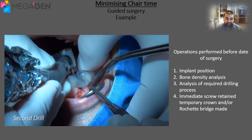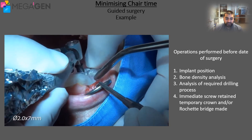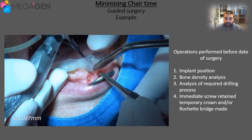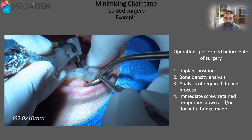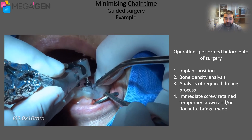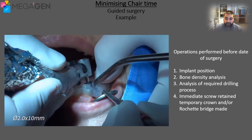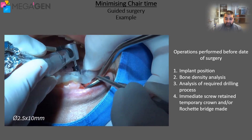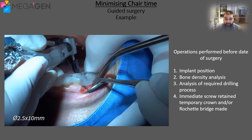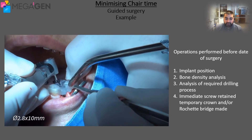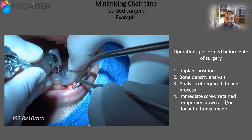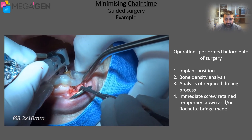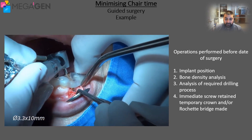This means that the dentist has been able to perform their daily routine without any interruption. So far, the operations performed are that we have decided on an implant position, looked at the bone density, decided on a drilling sequence to best suit the bone density and implant dimensions, and we have also created an immediate screw-retained temporary crown and potentially a Rochette bridge if the immediate screw-retained temporary crown is not viable for use.